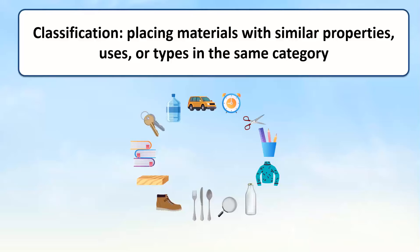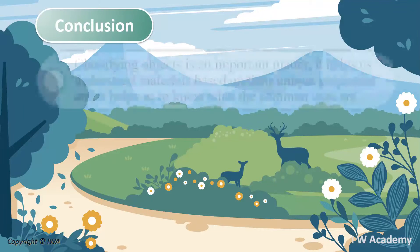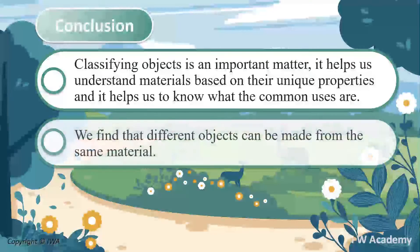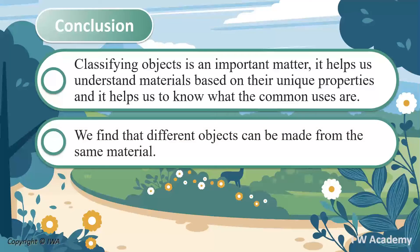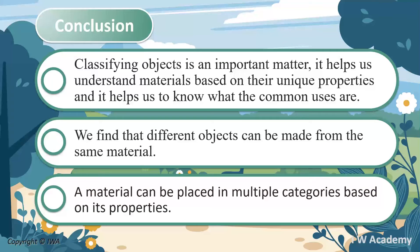Classification is placing materials with similar properties, uses, or types in the same category. In conclusion, we learned how classifying objects is an important skill. It helps us understand materials based on their unique properties and helps us know what their common uses are. We find that different objects can be made from the same material, and a material can be placed in multiple categories based on its properties.